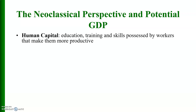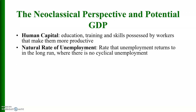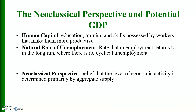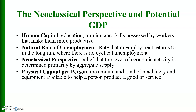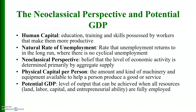Key concepts in new classical economics include human capital — the education, training, and skills possessed by workers that make them more productive — and the natural rate of unemployment, the rate that unemployment returns to in the long run where there is no cyclical unemployment. The new classical perspective believes that the level of economic activity is determined primarily by aggregate supply, not aggregate demand. Physical capital per person and potential GDP — the level of output achievable when all resources are fully employed — are also central concepts.